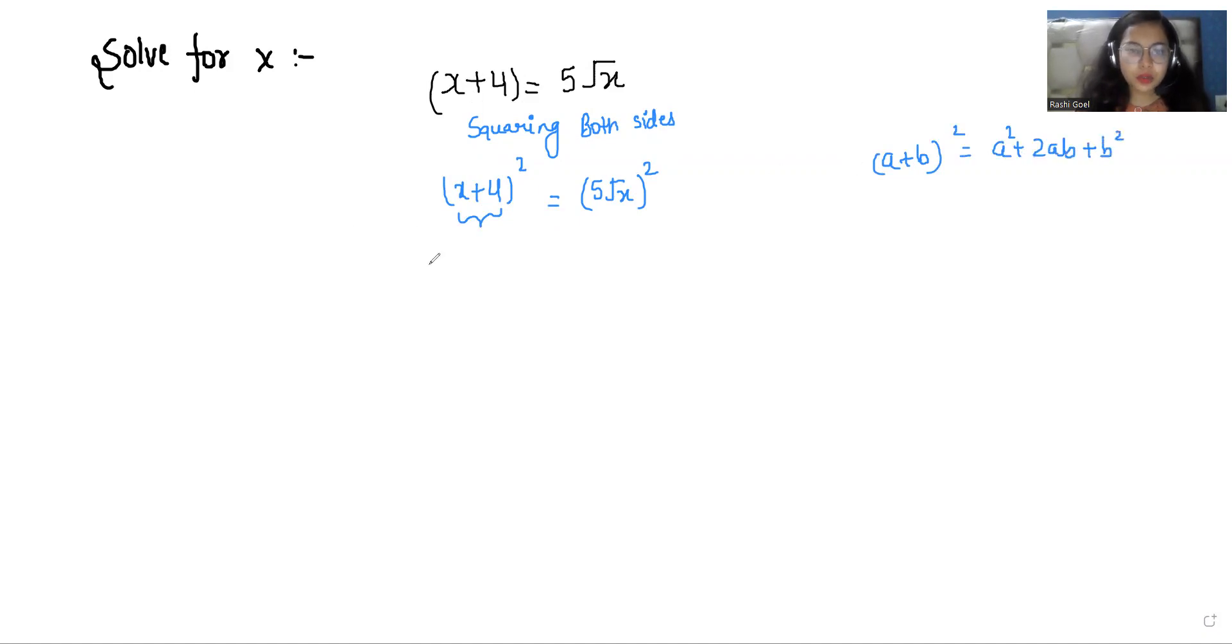So that is x² + 2·x·4 + 4² = 16 equals to here. First we will do the 5² that is 25 and √x squared is x.